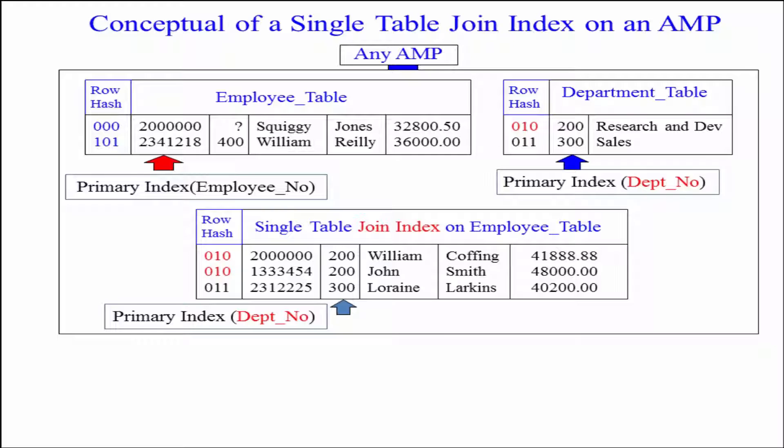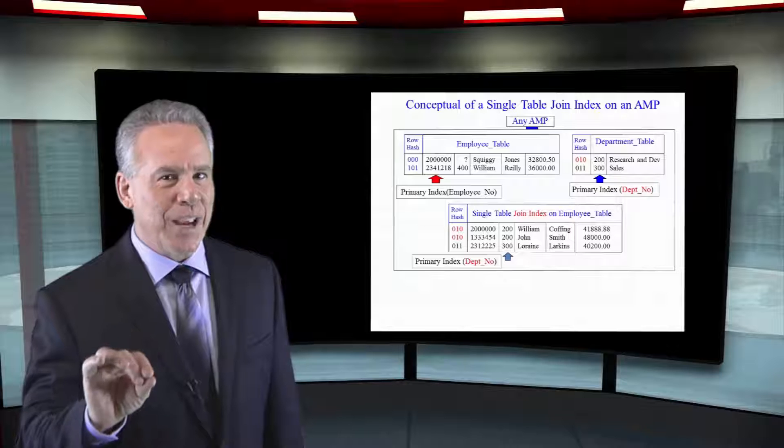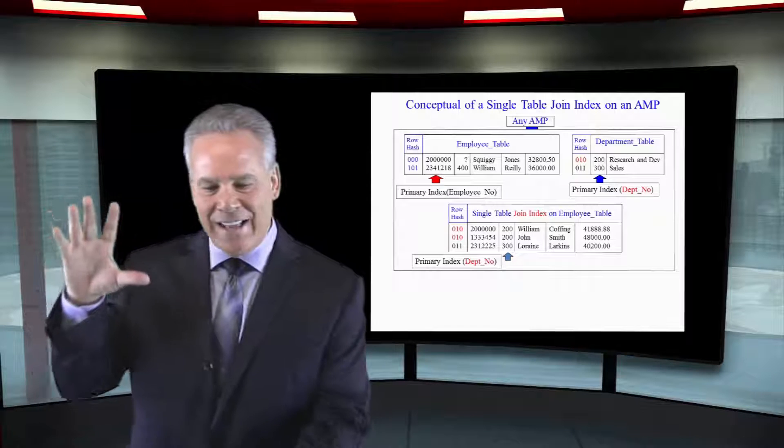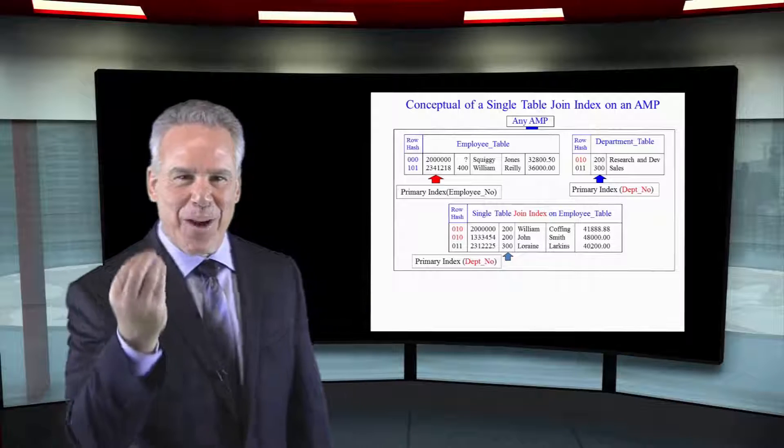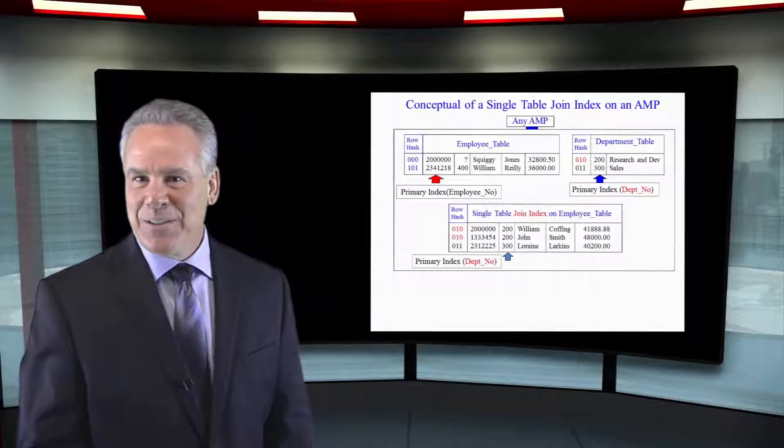Don't use the employee table. Use the single table join index because now that's a single AMP retrieve because the primary index of that is department number.